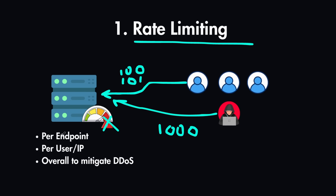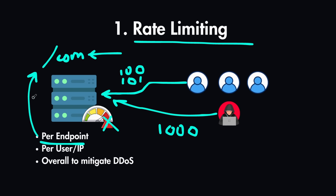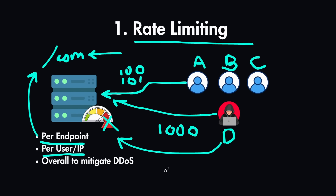These rate limits can be set per endpoint. For instance, a /comments endpoint — whether for creating or fetching comments — can be set to a strict number of requests per minute. You can also set it per user or IP address. Let's say users have IP addresses A, B, C, and an attacker has IP address D. If you get the 101st request from that IP address, you'll know that user overused the API and block it at the user IP level.